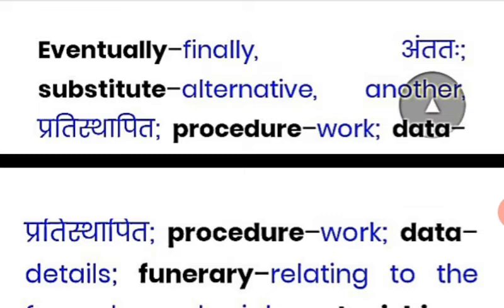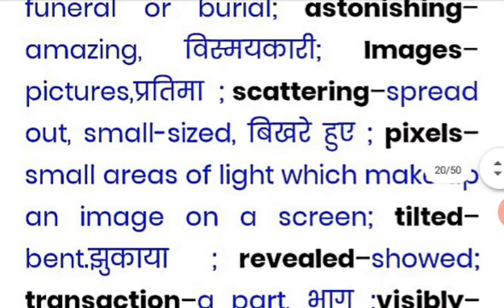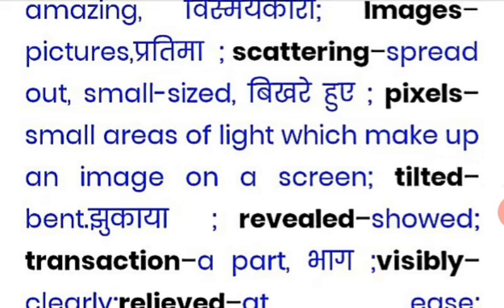'Procedure' means the way to do a task. 'Data' means figures or information. 'Funerary' — as said before — means related to burial, pertaining to the process of burying. 'Astonishing' means amazing. 'Image' means picture. 'Scattering' means everything spread around. 'Pixels' are the small dots that make up an image.